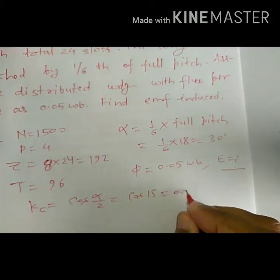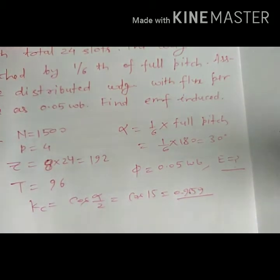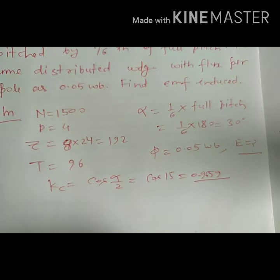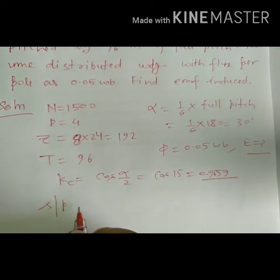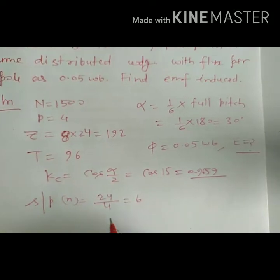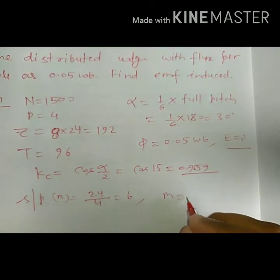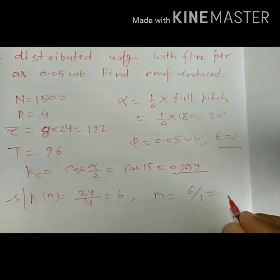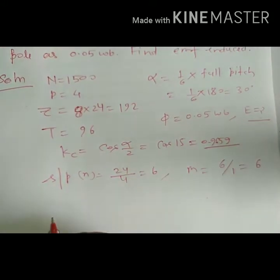cos(15 degrees) is 0.9659. Coming to distribution factor Kd — before that, we must know slots per pole. Total slots are 24, number of poles are 4, so slots per pole is 6. Slots per pole per phase will be 6 divided by 1 (since it is single phase), which is 6.